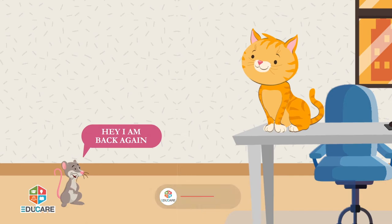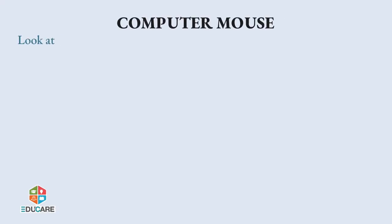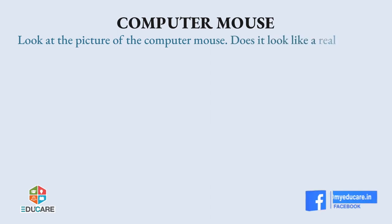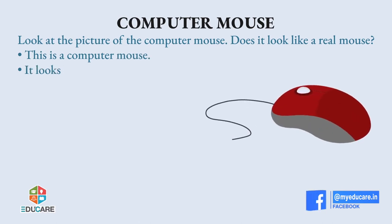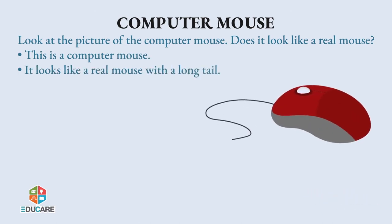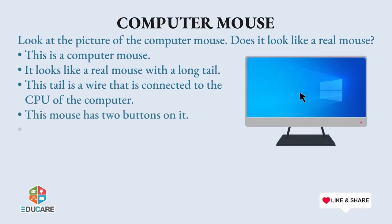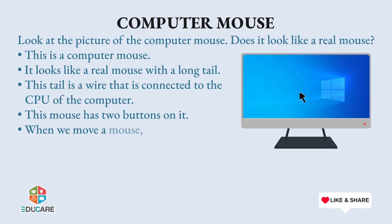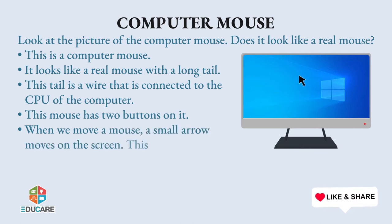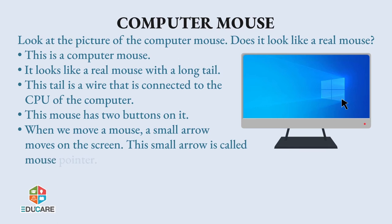Hey, I am back again. Computer Mouse. Look at the picture of the computer mouse. Does it look like a real mouse? This is a computer mouse. It looks like a real mouse with a long tail. This tail is a wire that is connected to the CPU of the computer. This mouse has two buttons on it. When we move a mouse, a small arrow moves on the screen. This small arrow is called the mouse pointer.